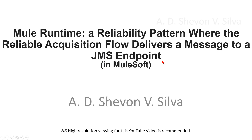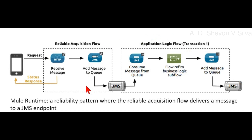This is a reliability pattern where the reliable acquisition flow delivers a message to a JMS endpoint. Here you can see a reliability pattern illustrated in this diagram. You can couple the reliable acquisition flow with any type of transactional endpoint — you don't have to use a VM endpoint in a reliability pattern.